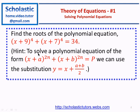As a hint given, to solve a polynomial equation of the form (x + a)^2n + (x + b)^2n = p, we can use the substitution y = x + (a + b)/2. In this case, a is 9, b is 7, and n is 2 because we have an even power of 4.